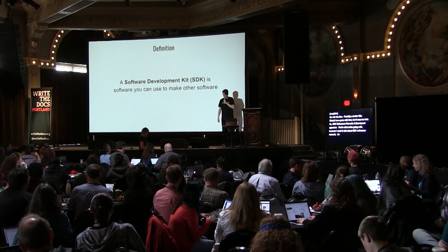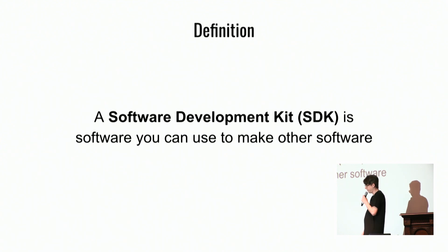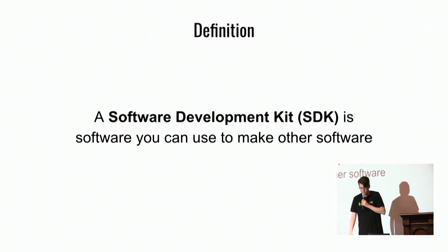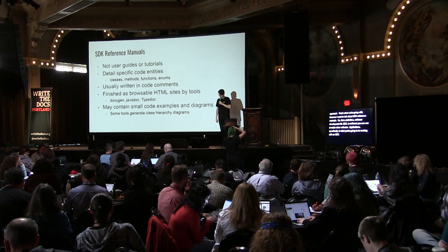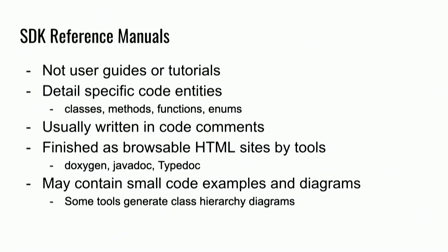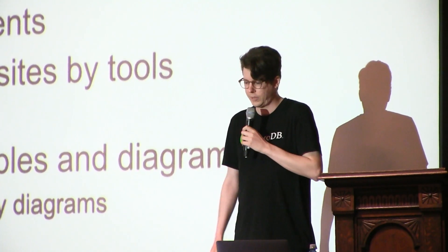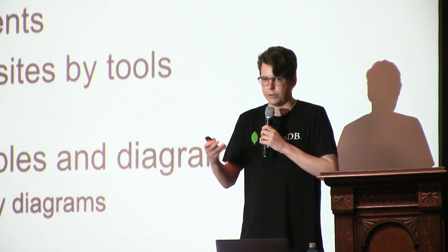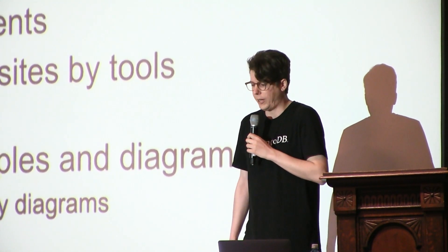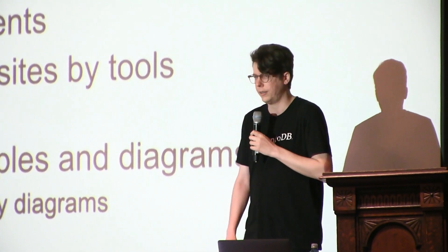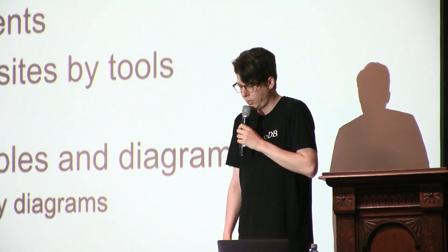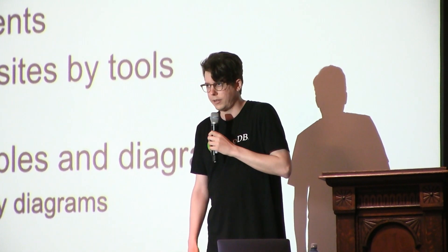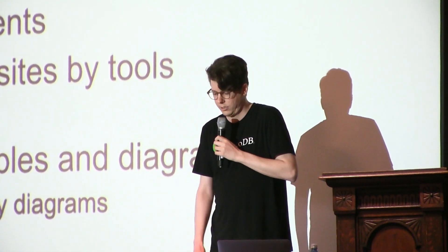First, a definition. A Software Development Kit, or SDK, is software that you can use to make other software — applications specifically. Reference Manuals for SDKs are not user guides or tutorials. They detail the specific code entities: the classes, methods, functions, parameters, return values, and things like that. They tend to be written in the actual code comments, and then generated into a browsable site or PDF by tools like Doxygen, Javadoc, and Typedoc, depending on the language. They may contain code examples and diagrams, but they're not tutorials and they won't necessarily cover high-level concepts.